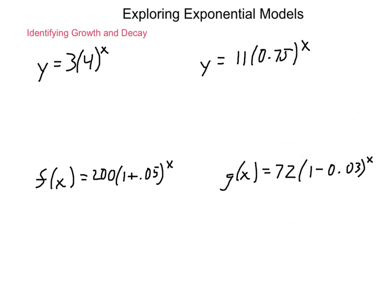So for problem number one, y equals 3 times 4 to the x. Because 4 is being raised to the x power and 4 is greater than 1, this shows growth. Now, along with that, we identify its growth. The next order of business is where does it start, and that is our a value. So we will have, on a basic graph, it's starting at 0, 3. The reason is, if we were to substitute 0 in for x, 4 to the 0 power is 1, so 3 times 1 is 3.